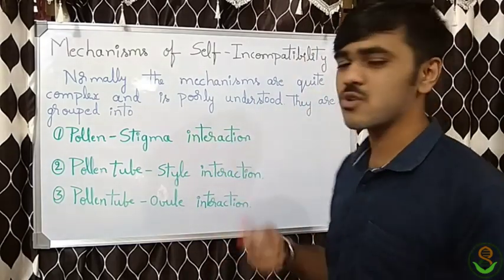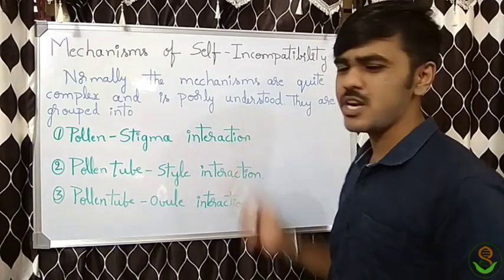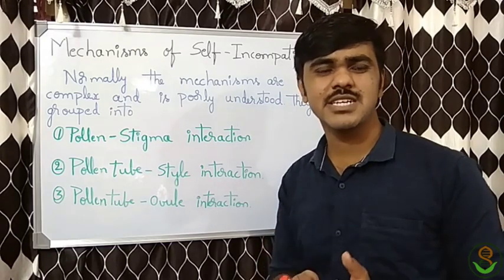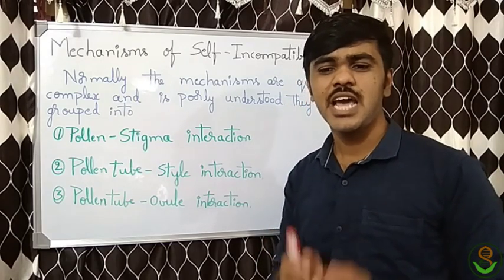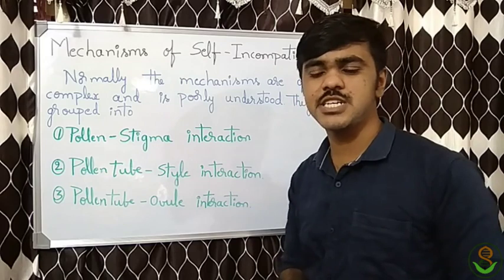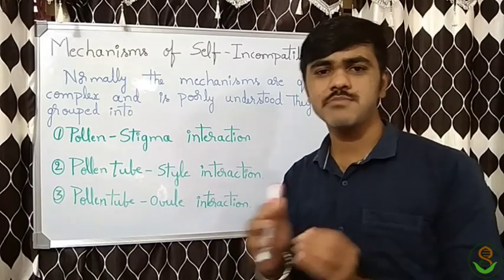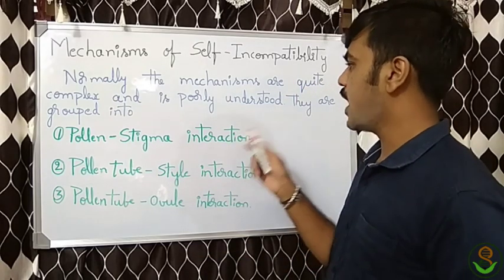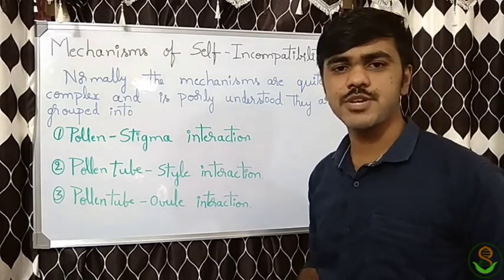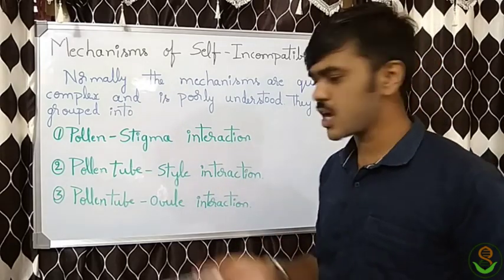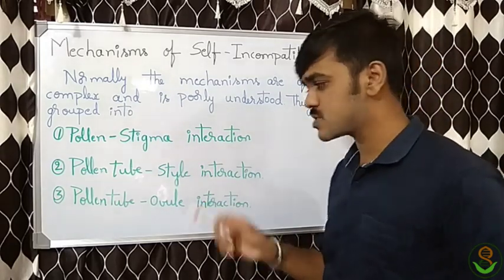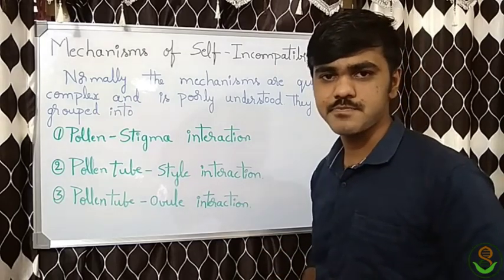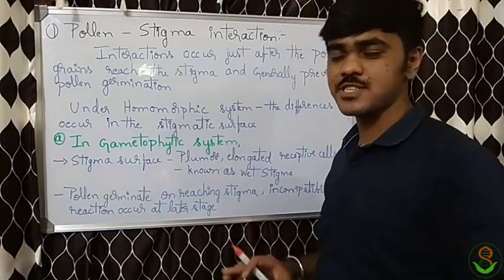The mechanisms of self-incompatibility are quite complex and poorly understood. We can't exactly predict the interactions, but to some percentage we can say what might happen. Based on that, it has been grouped into three categories: pollen-stigma interactions, pollen tube-style interactions, and pollen tube-ovule interactions.